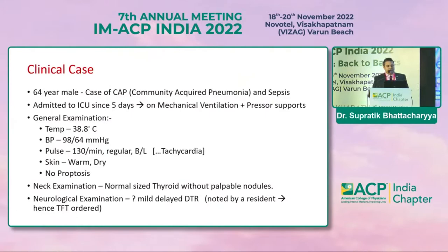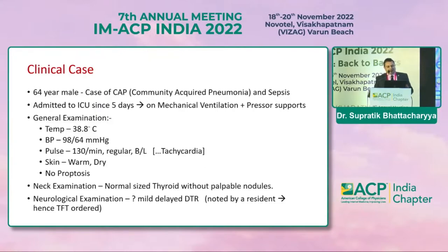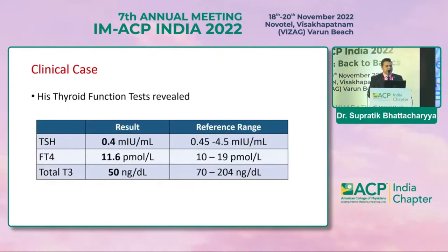Let's start with the case. It's a 64-year-old gentleman with community-acquired pneumonia and sepsis, admitted to the ICU five days back on mechanical ventilation with pressor support. Looking at the vitals: temperature is 38.8, blood pressure is 98 over 64, pulse is 130, skin warm and dry, no proptosis. Neck examination shows a normal-sized thyroid without any palpable nodules. Neurological examination revealed a mild delayed deep tendon reflex, which warranted the resident to order a TFT. TSH was 0.4, free T4 was 11.6, and total T3 was 50.